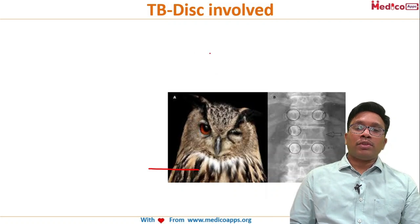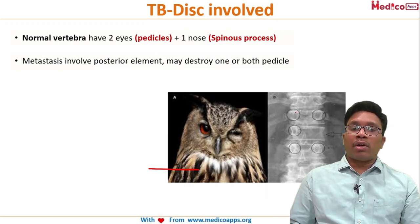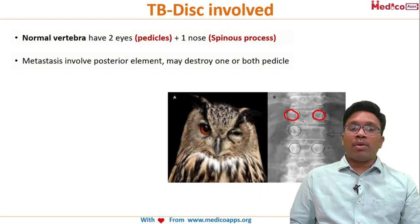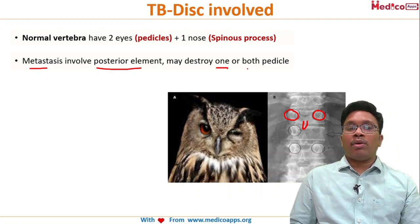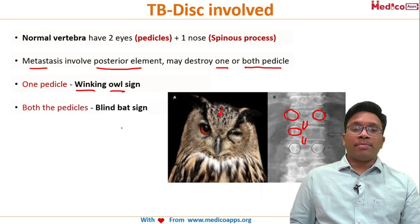The winking owl sign: on an AP X-ray of a normal vertebra, the two pedicles look like the two eyes of an owl, and the spinous process looks like the nose. When metastasis destroys one pedicle, one eye is missing — this is the winking owl sign. If both pedicles are destroyed, it is called the blind bat sign.